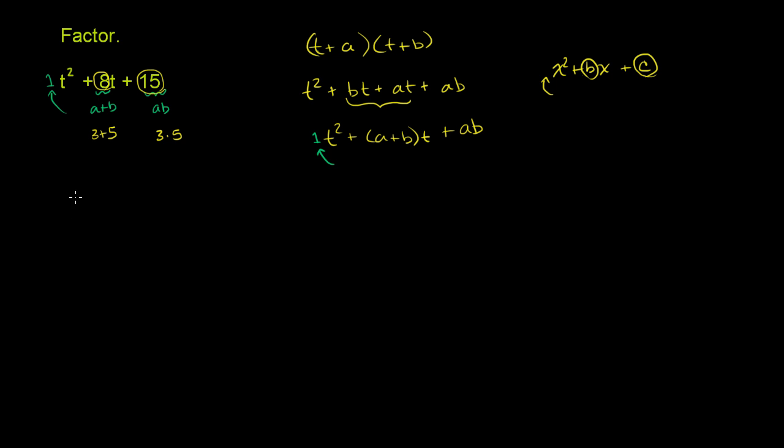So this polynomial right here, I'm going to write it as t squared plus, instead of writing 8t, I'm going to write it as the sum of at plus bt, or as the sum of 3t plus 5t. So plus 3t plus 5t. So I've started here, and then I'm going to this step, where I break up that middle term with the coefficients that add up to the 8, and then finally plus 15.